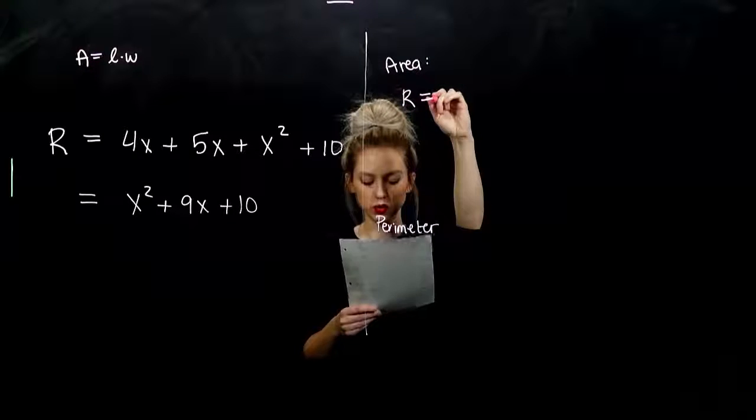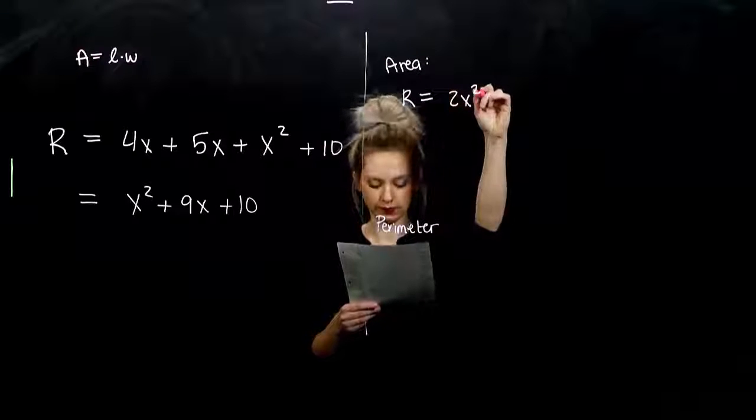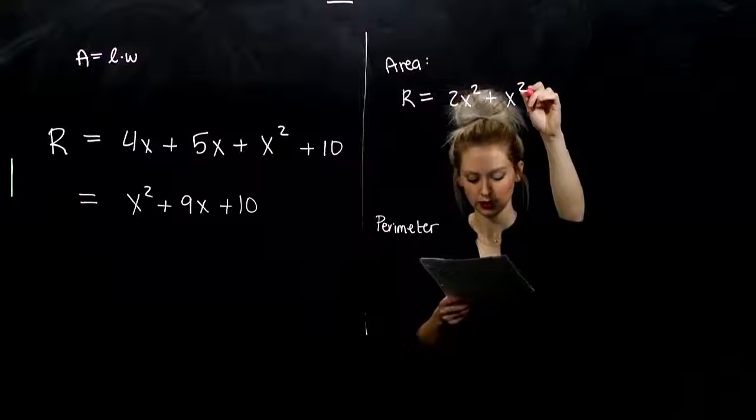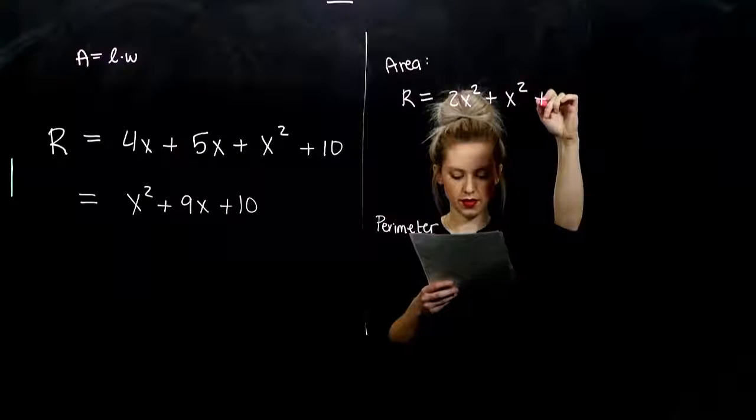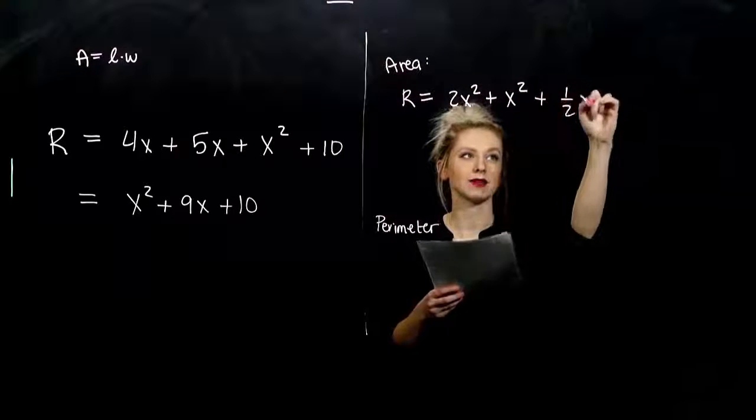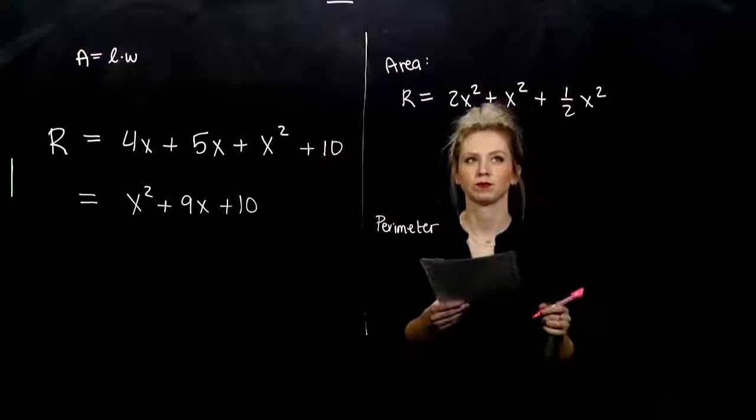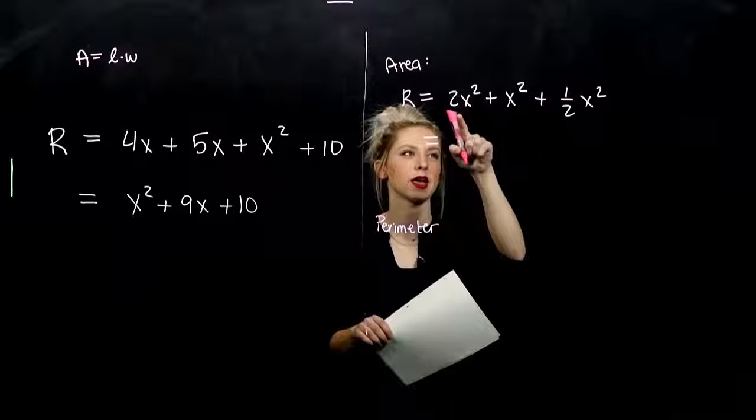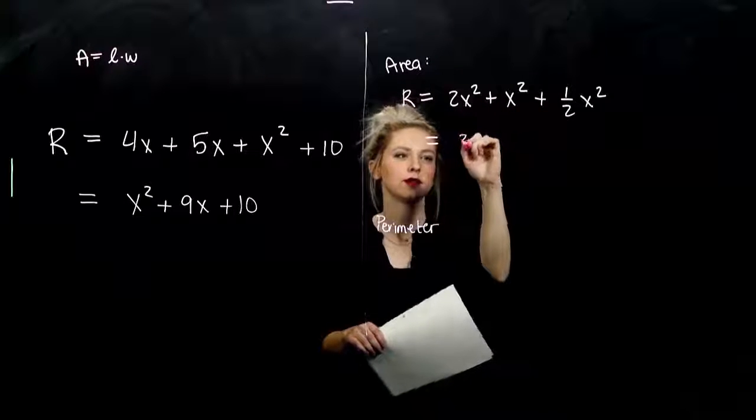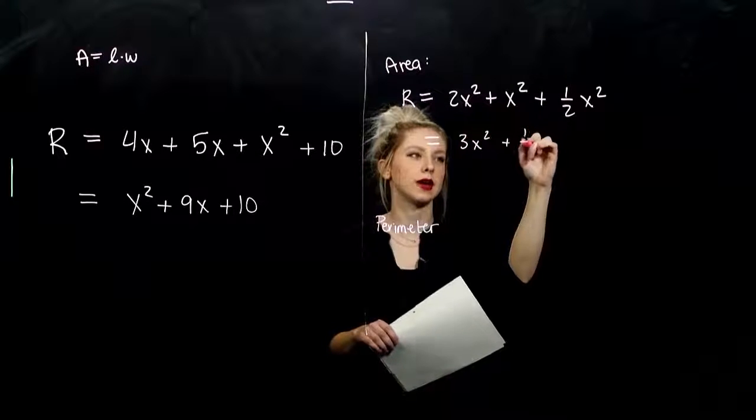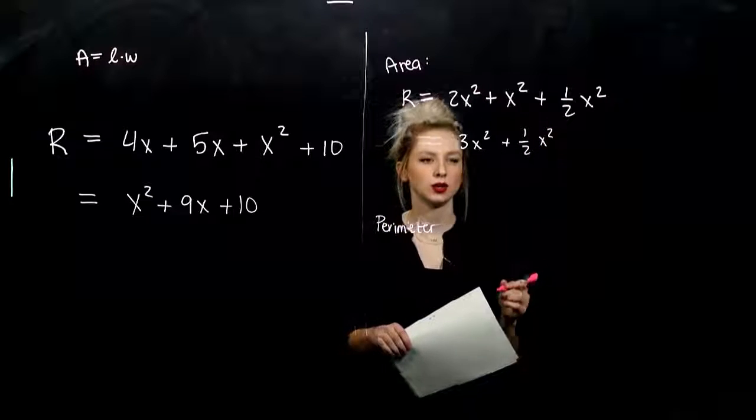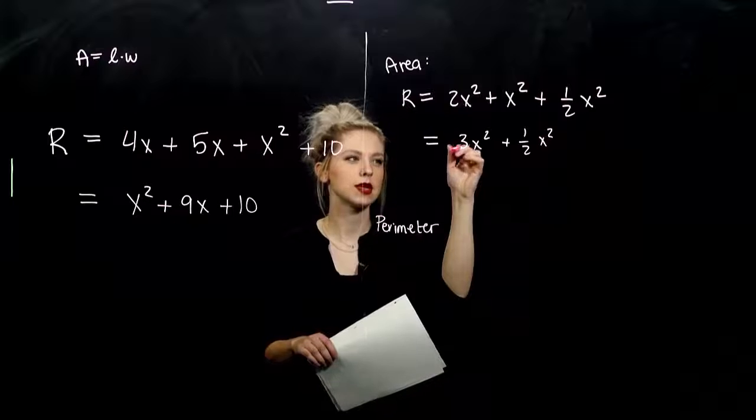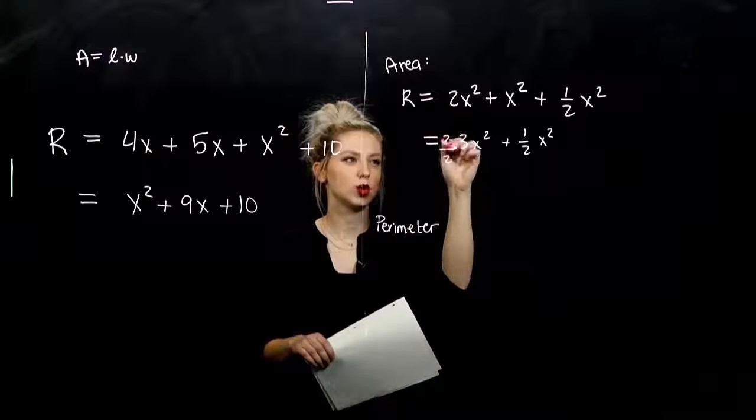Length times width of the first one is going to be 2X squared. Length times width of the second X squared. Length times width of the third one, one half X squared. And we can combine all these like terms. So we'll just see, how many do I have here that I can combine? I've got 3X squared and I'm adding a half to that. So we need common denominators to be able to combine those.